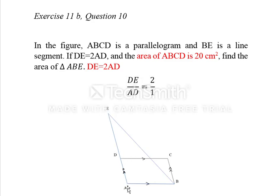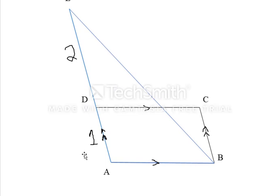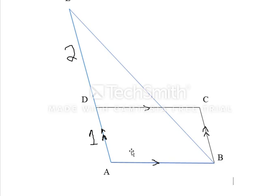Let's show this ratio on the figure: DE is 2 and AD is 1. We have to find the area of the big triangle. To start the solution, let's first discuss this triangle — you can see it is an obtuse angle triangle, and the angle at A is obtuse.